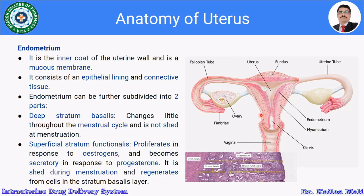The endometrium is the inner coat of the uterine wall and is a mucous membrane consisting of epithelial lining and connective tissues. It is divided into the stratum basalis (deep layer) and stratum functionalis (superficial layer). The deep stratum basalis changes little throughout the menstrual cycle and is not shed at menstruation, while the superficial stratum functionalis proliferates in response to estrogen and becomes secretory in response to progesterone.